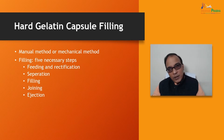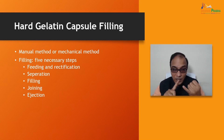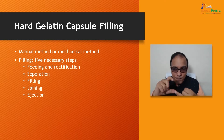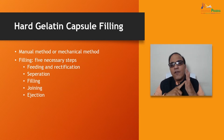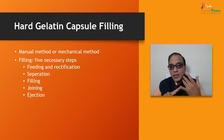There are two methods of hard gelatin capsule filling: manual and mechanical. The filling process in general has five necessary steps: number one, feeding and rectification; number two, separation of body and cap; number three, filling; number four, joining; and number five, ejection. Remember these five important steps.